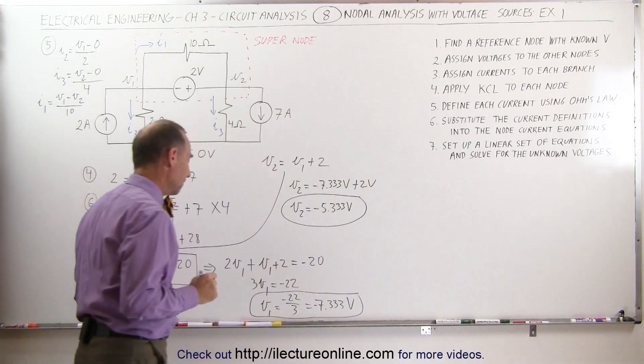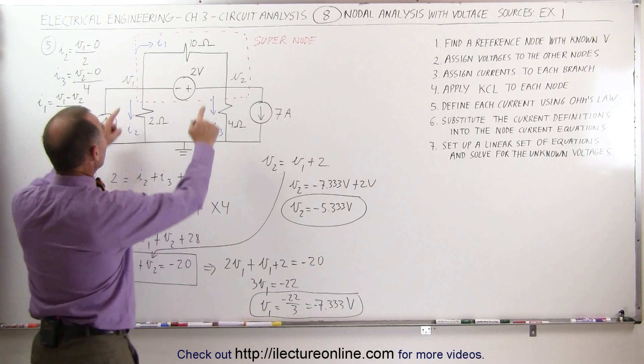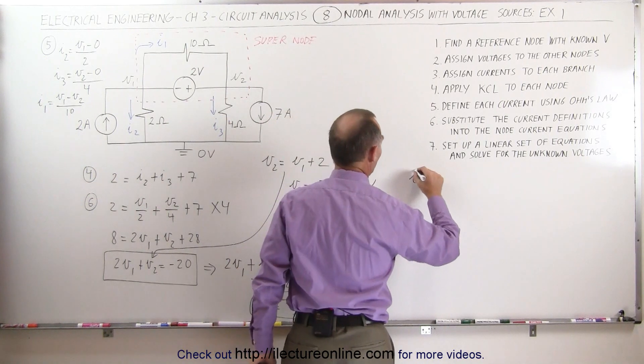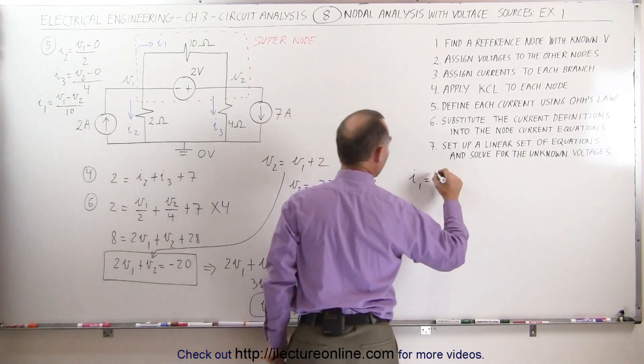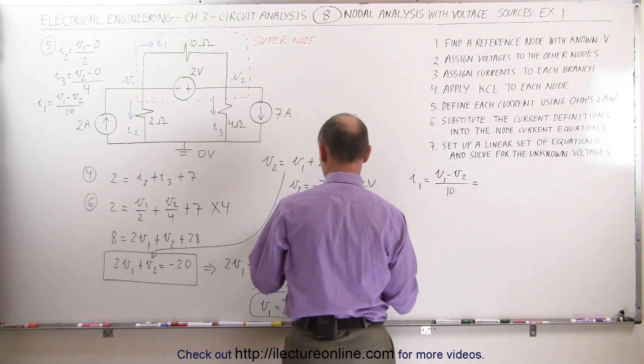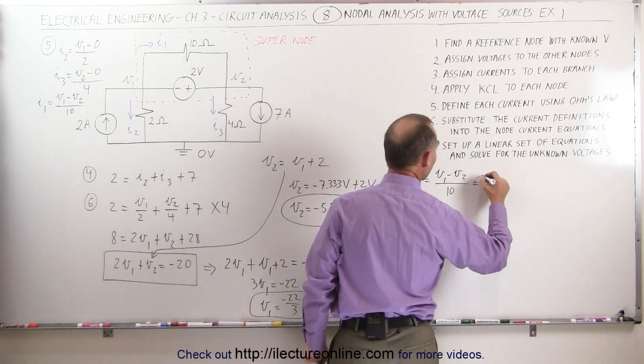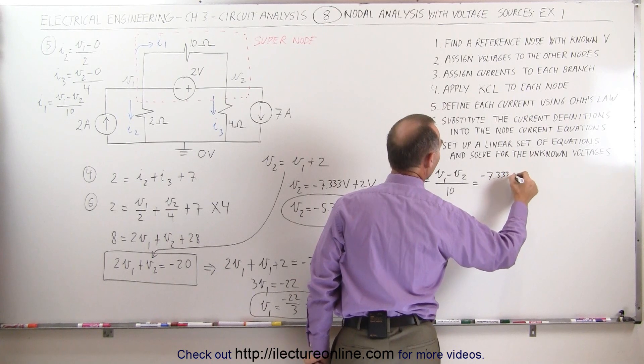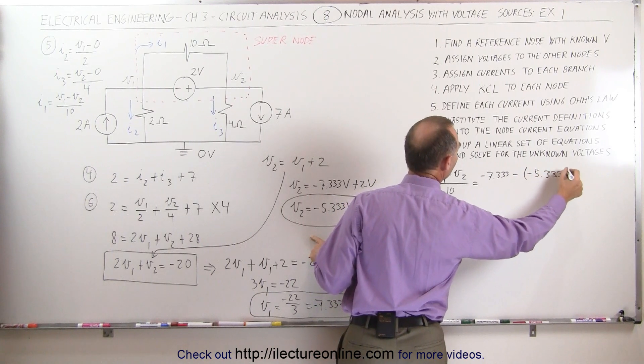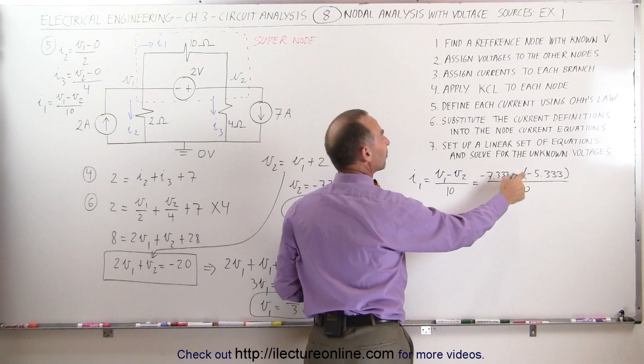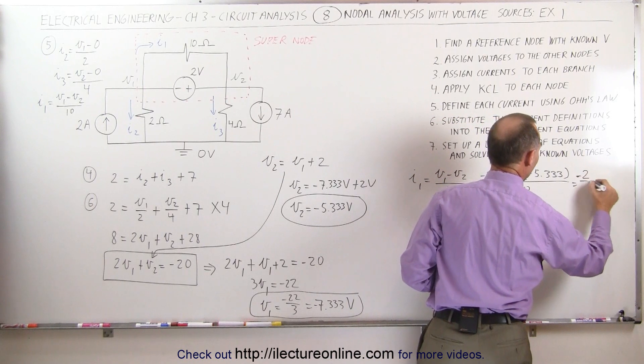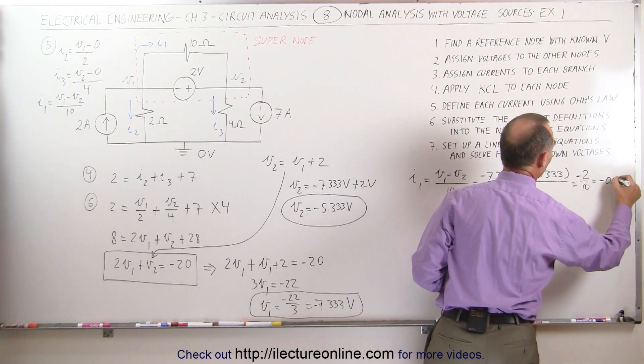And that gives me the voltage over here. Once I have determined the voltage at my two nodes, I can now come back and find the currents I1, I2, and I3. I1 is now equal to V1 minus V2 divided by 10. V1 was defined as minus 7.333, and subtract from that V2, which was defined as minus 5.333. Divide the whole thing by 10, minus 7 plus 5, that's minus 2, that's minus 2 divided by 10, which is equal to minus 0.2 amps.